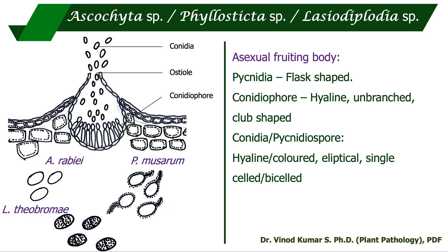Ascochyta rabiei causes Ascochyta blight of chickpea, Phyllosticta musarum causes freckle leaf spot of banana, and Lasiodiplodia theobromae causes dieback and fruit rot in several horticultural crops. All these pathogens produce an asexual fruiting body called pycnidia — a flask-shaped structure. At the base, conidiophores are basally arranged, hyaline, unbranched, and club-shaped. The conidia, also known as pycnidiospores, may be elliptical and single-celled or bicelled depending on the genus and species. For example: Ascochyta rabiei produces elliptical, hyaline, single-celled conidia; Lasiodiplodia theobromae produces brown, bicelled conidia; and Phyllosticta musarum produces single-celled, hyaline conidia with an apical appendage covered in mucilage.